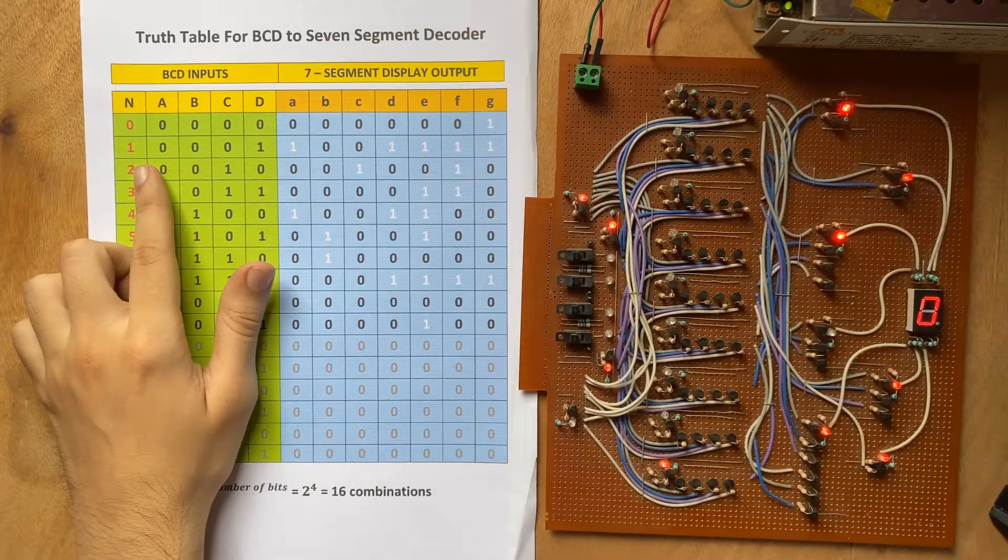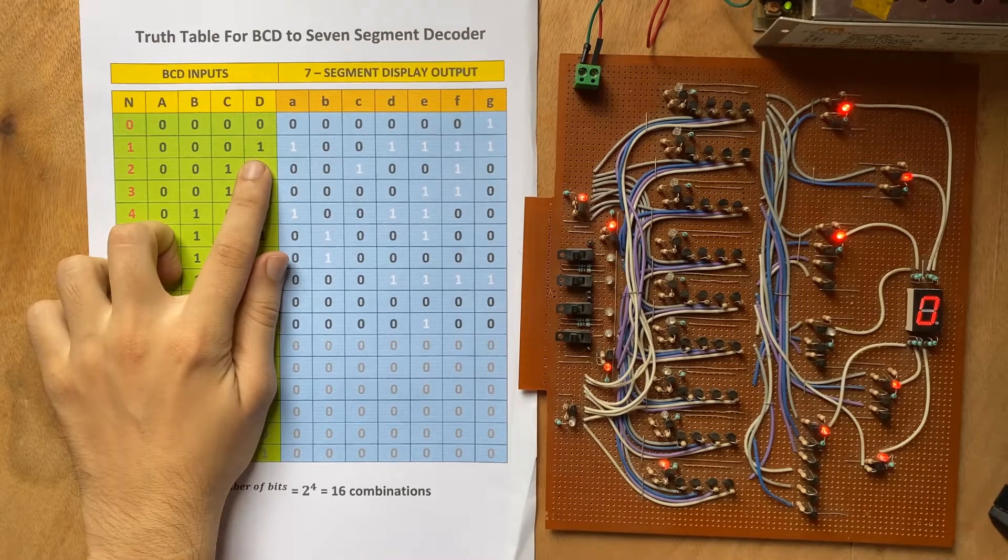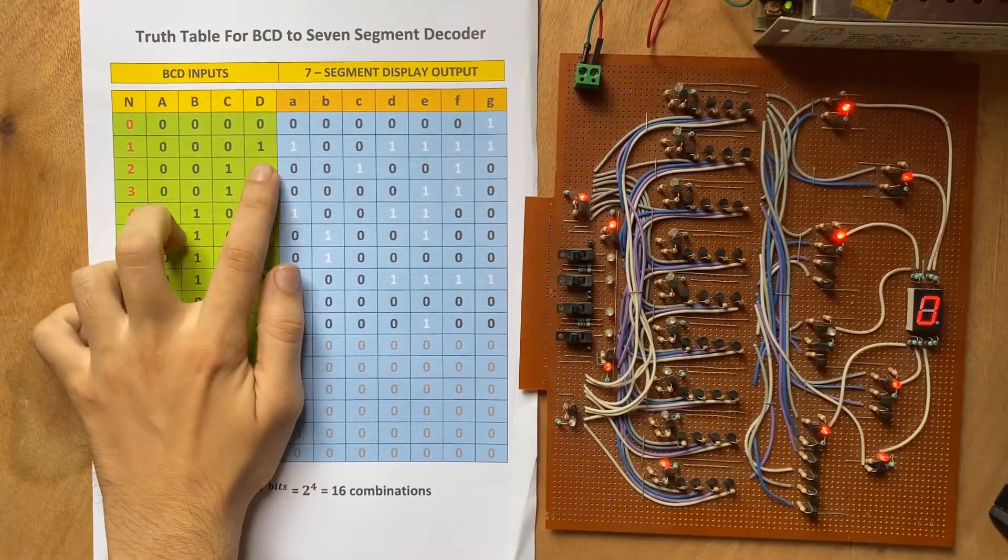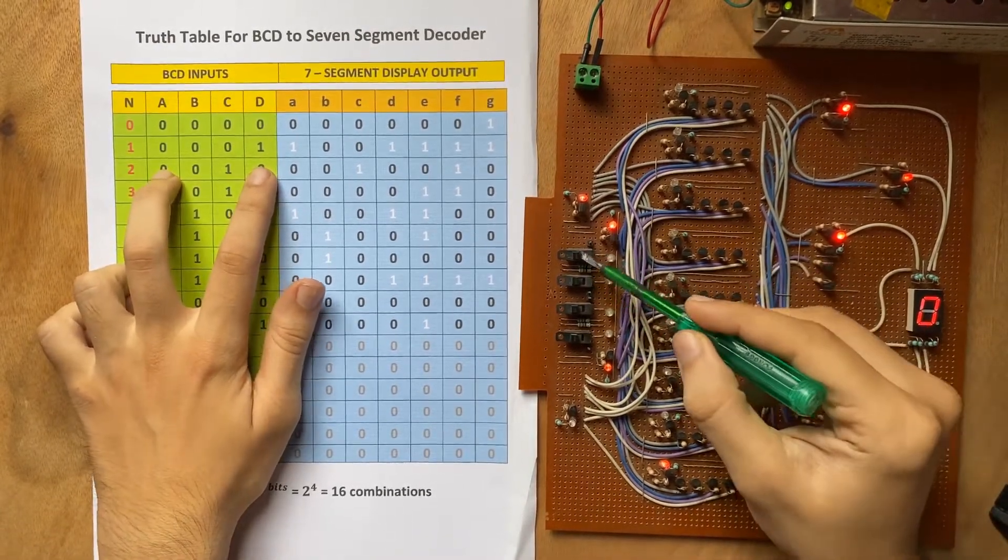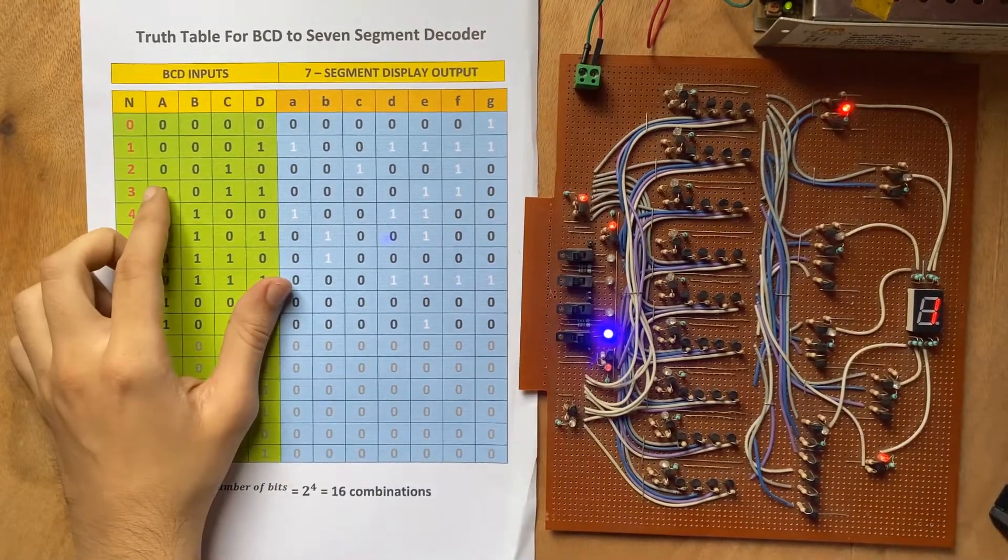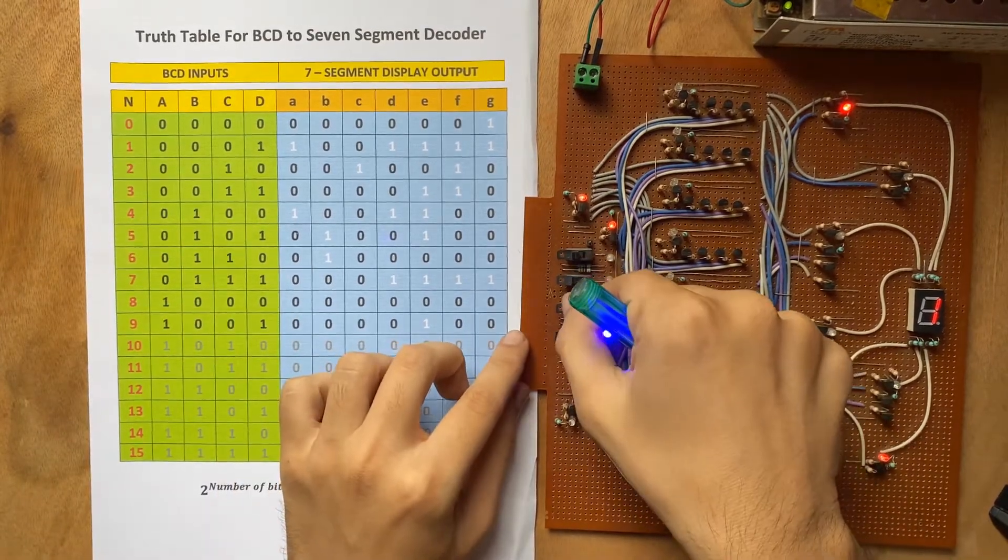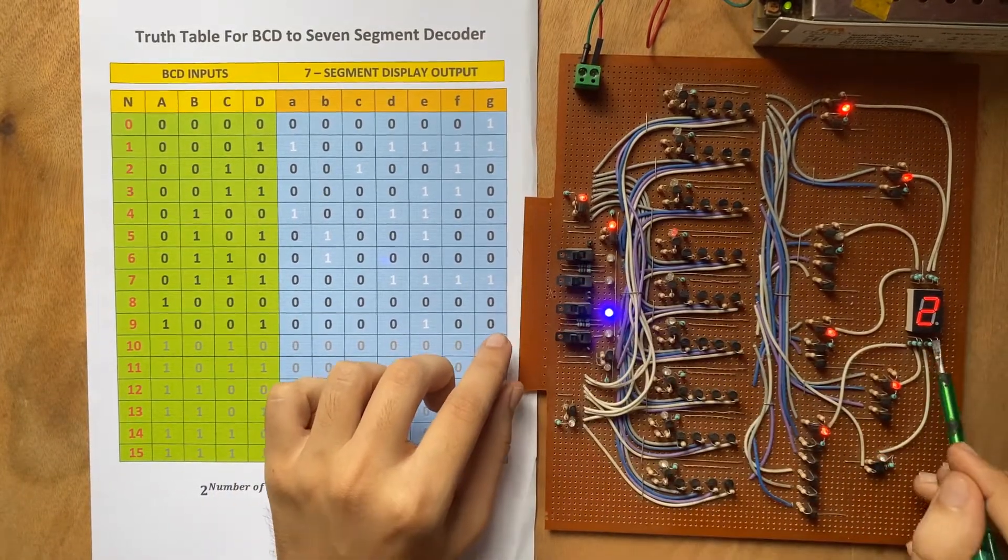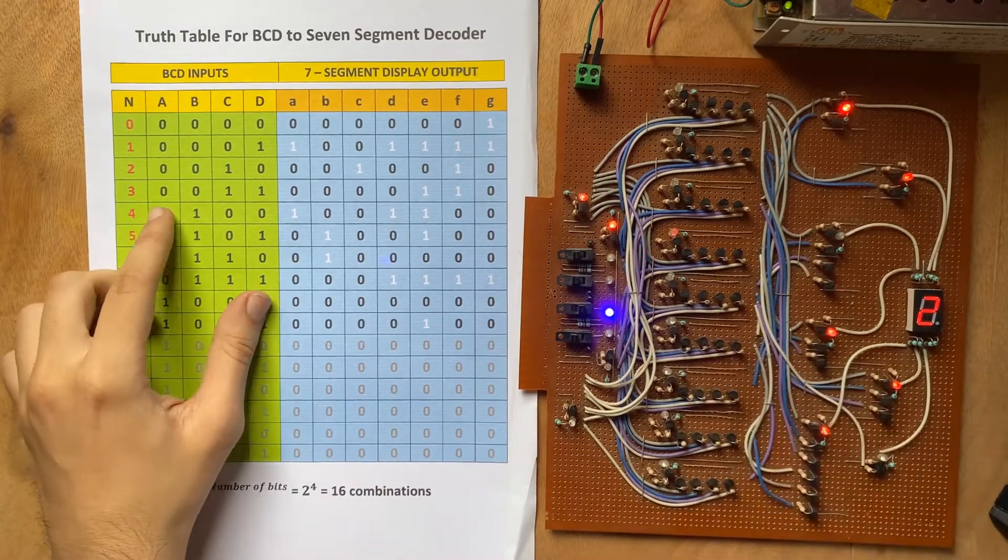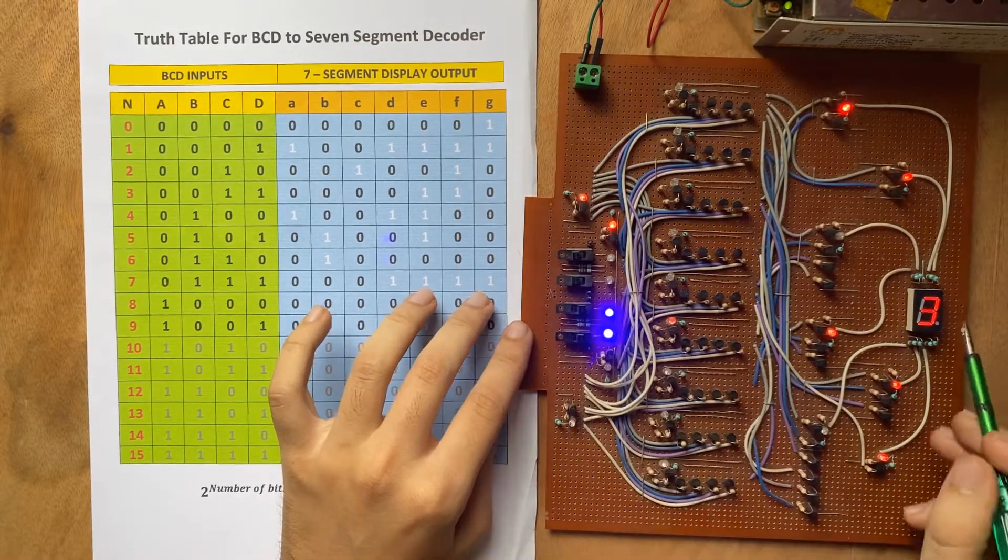Okay, so let's start with 1. For 1, the binary code is 0001. So let me mention here, this is LSB and this is MSB. So we will go like this. So 0001, it is 1. Now next for 2, 0010, so 0010, it is 2. Next for 3, it is 0011, so 0011, it is 3.